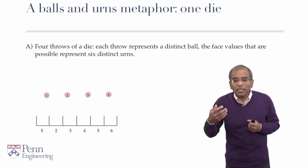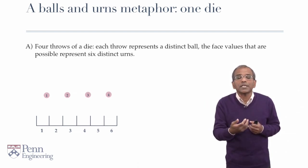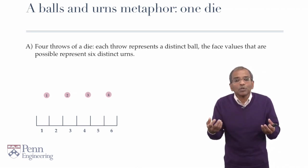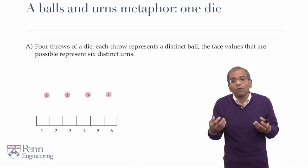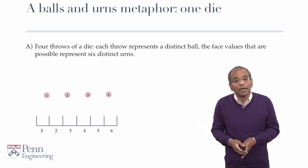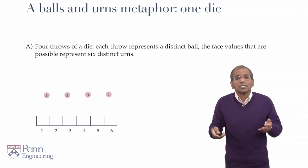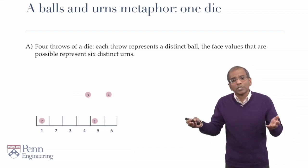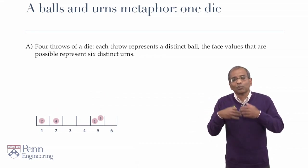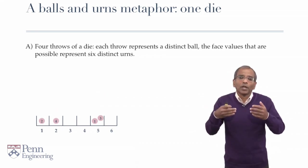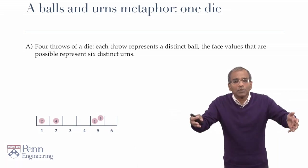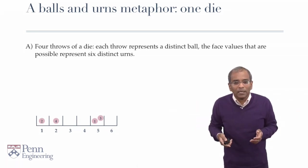Each throw can result in one of 6 possible faces, 6 possible results. Label these possible results 1, 2, 3, 4, 5, and 6 by 6 distinct urns as seen in your figure. And now, schematically, as one does the experiment, ball 1 goes, in this case to urn 5, throw 2 results in 1, throw 3 in 5, throw 4 in 2, and you've got a sequence of throw outcomes modeled schematically.